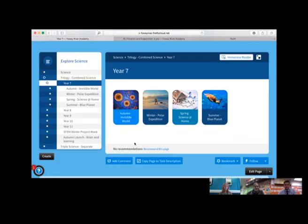In science, we've designed our curriculum so that students link their learning to the world around them. This is our scheme of work in year seven, where you will start off by exploring the invisible world, go on to a polar expedition, learn about science at home and then the impact of humans on our lovely blue planet.